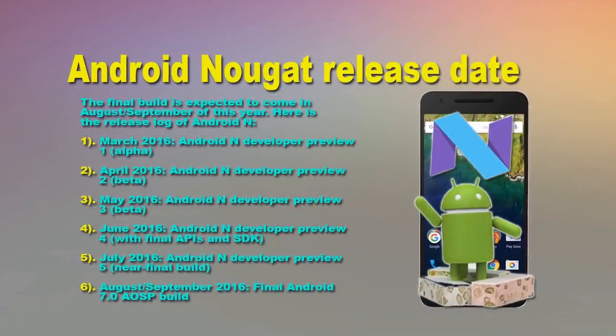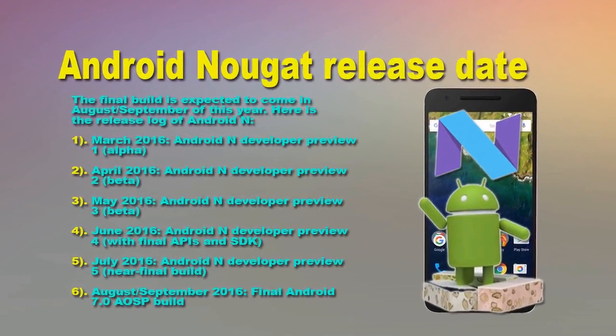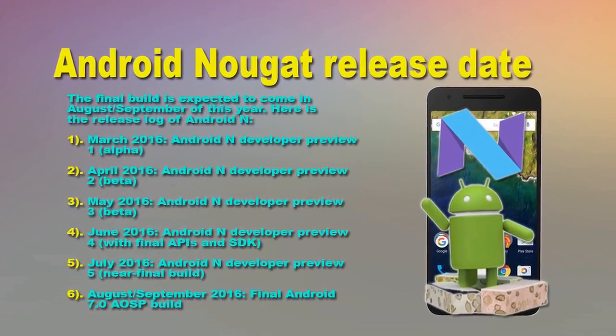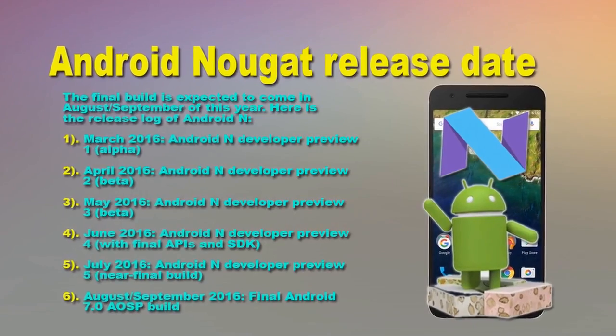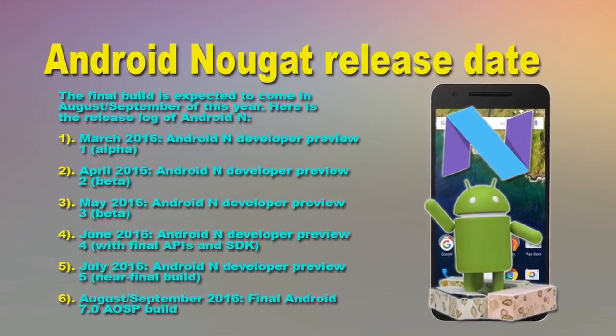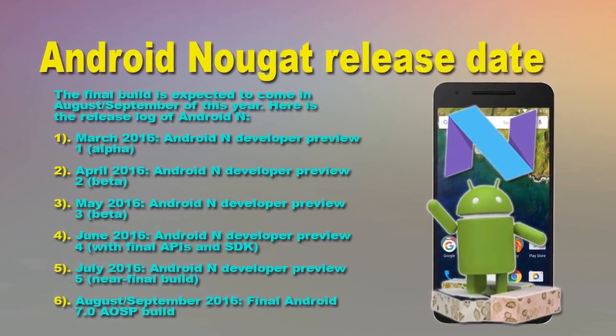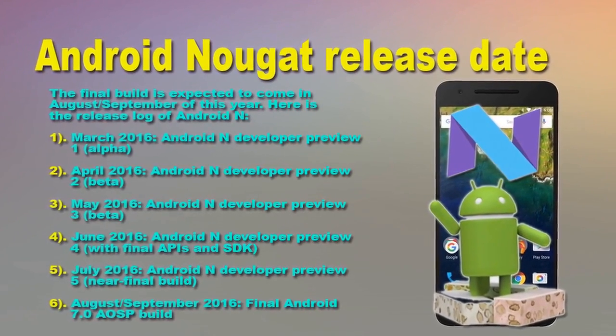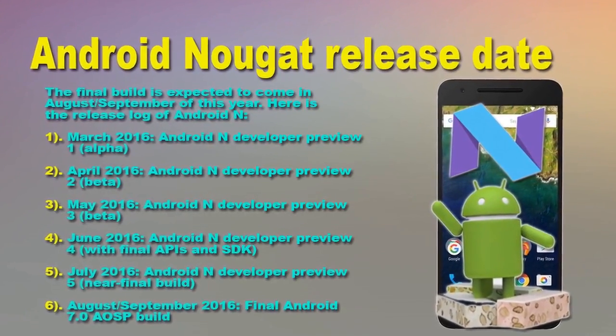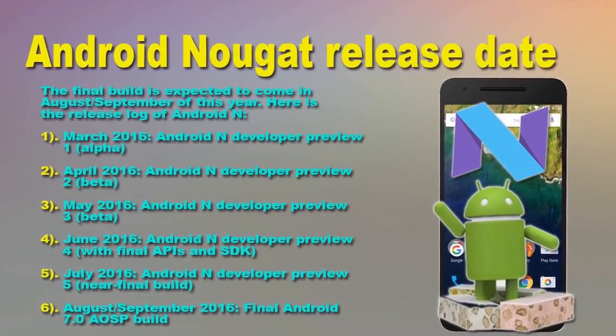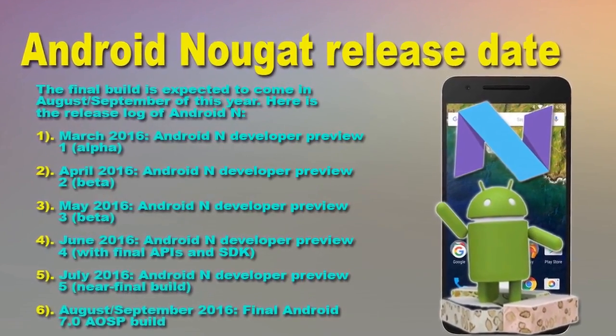Android Nougat Release Date. Android Nougat is expected to release in August or September 2016, and it will be the final Android 7.